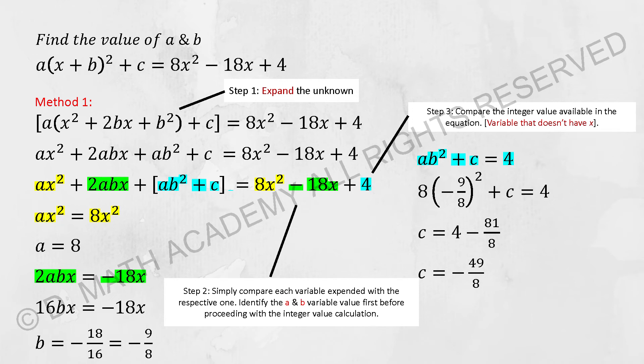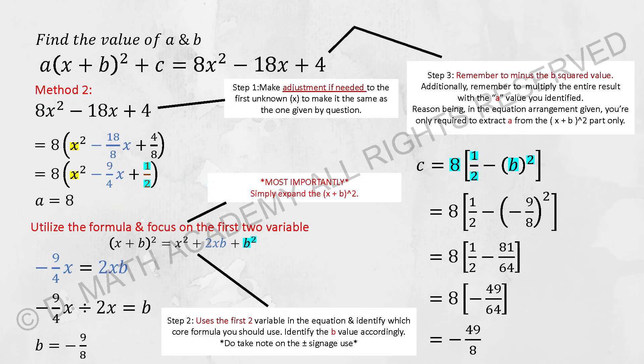So it is slightly tricky for you to run method 2 on this. However, as usual, do the first thing first, which is extract the 8 from the entire equation. So you will have 8(x² - 9/4x + 1/2), so your a is actually 8.